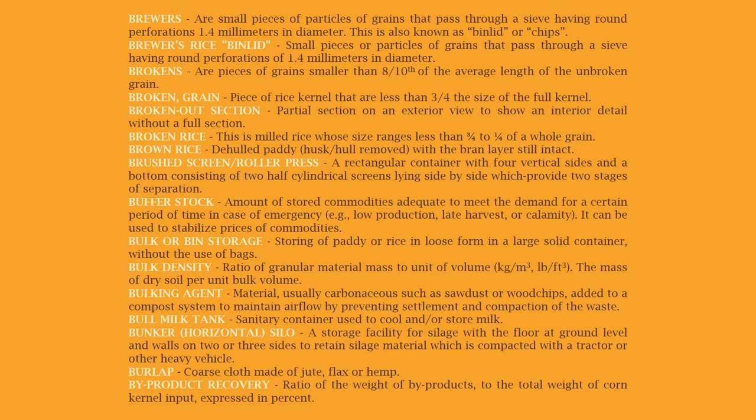Brown rice: de-hulled paddy with husk and hull removed, but with the bran layer still intact. Brushed screen roller press: a rectangular container with four vertical sides and a bottom consisting of two half-cylindrical screens lying side by side, which provide two stages of separation. Buffer stock: amount of stored commodities adequate to meet demand for a certain period of time in case of emergency such as low production, late harvest, or calamity; used to stabilize prices of commodities.